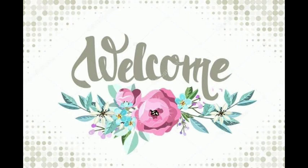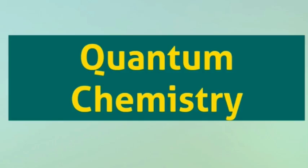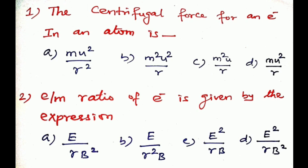Hi friends, in this video we will discuss some important questions in quantum chemistry. Question one: the centrifugal force for an electron in an atom is dash. The formula is m·u²/r, where m is the mass, u is the velocity, and r is the radius. Option d, m·u²/r, is the correct answer.